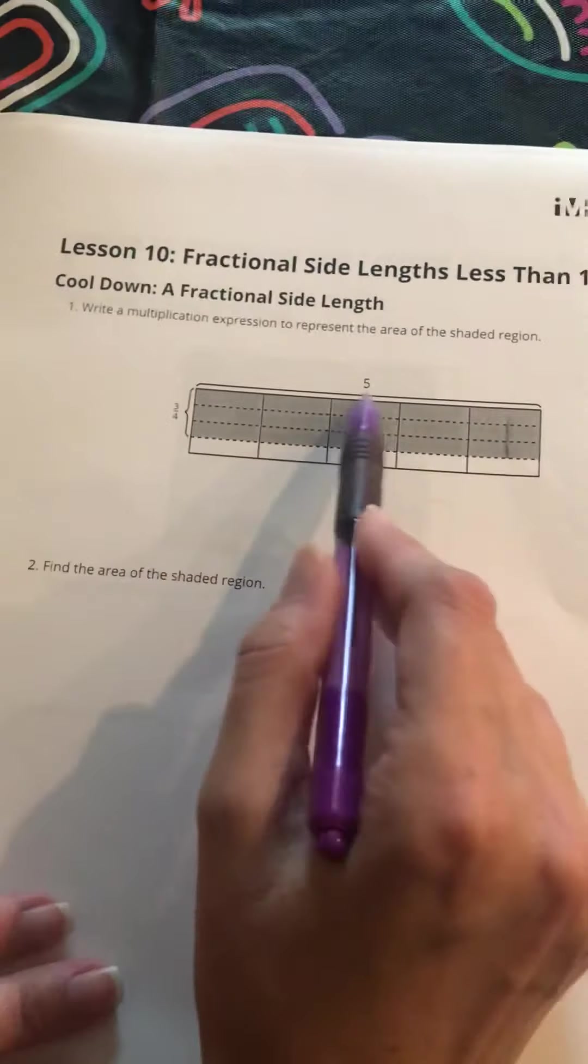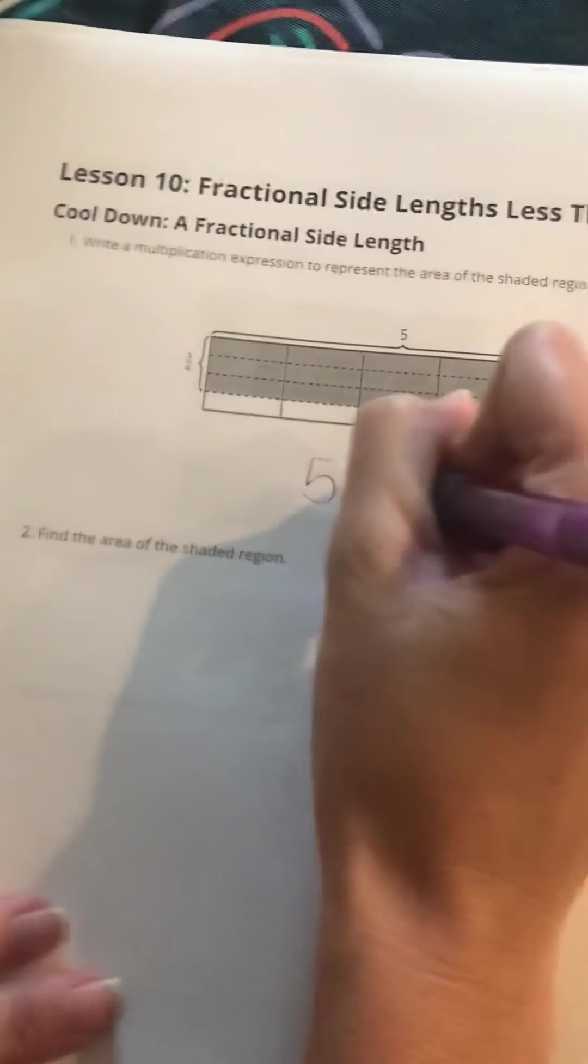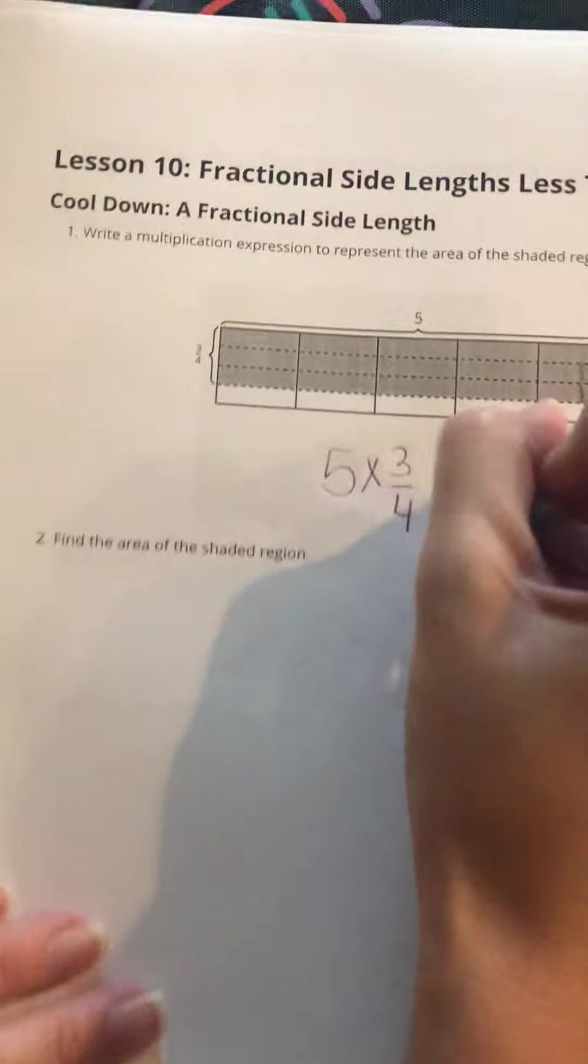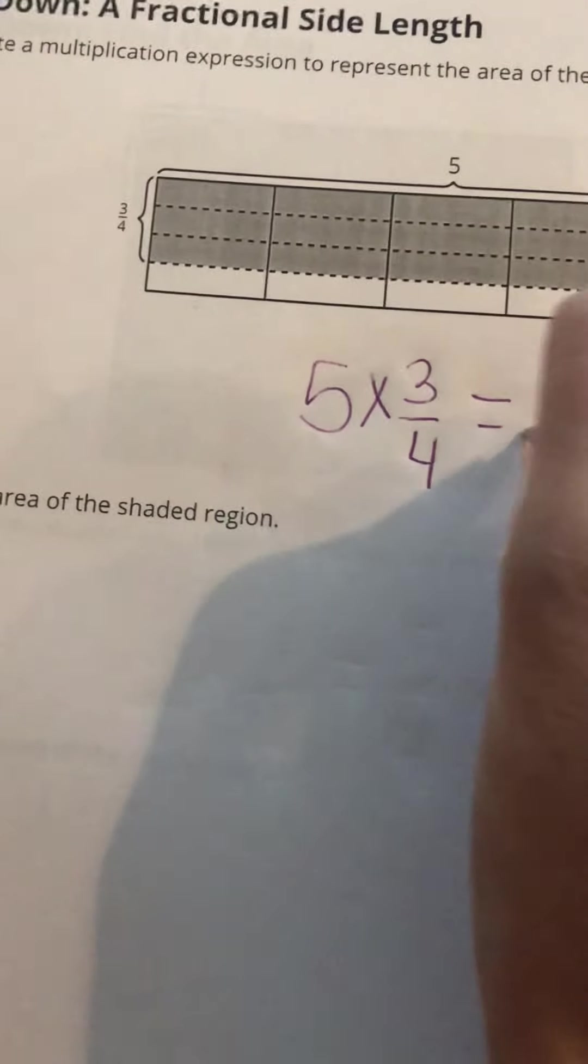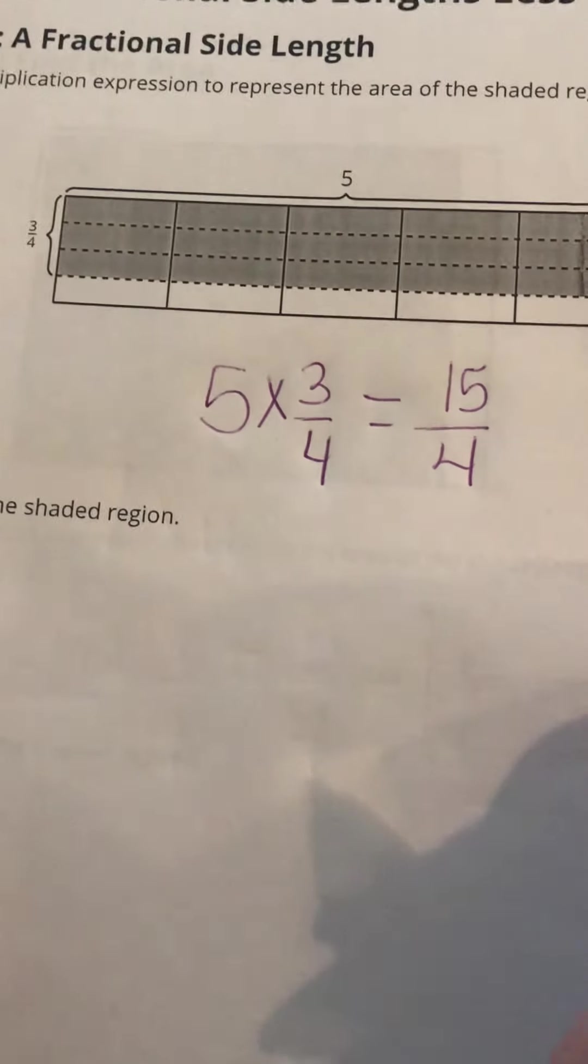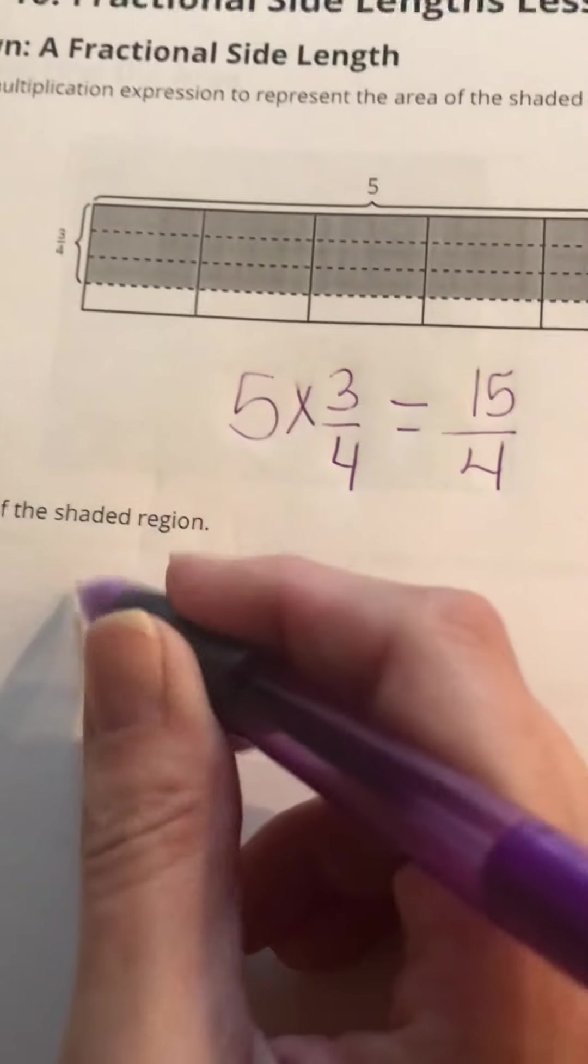So it would be 5 times 3/4. If I multiply the 5 times the 3, I end up with 15/4, and that's what number 2, they're asking us to find the area of the shaded region. So we wrote our expression here and then I just went ahead and found the area.